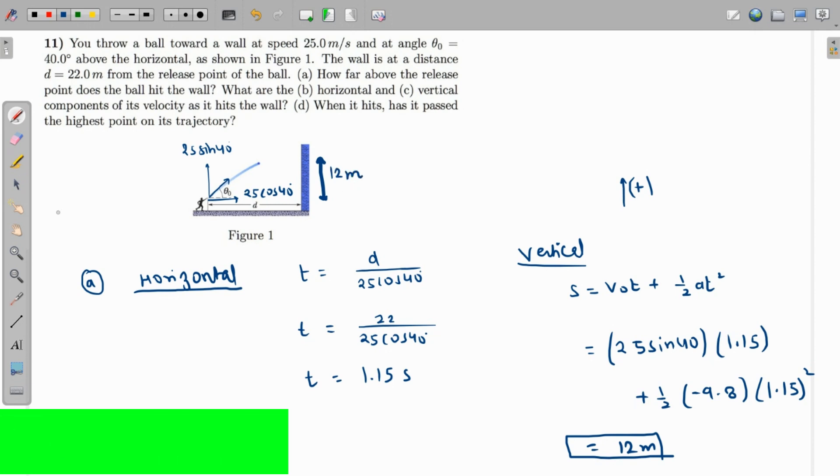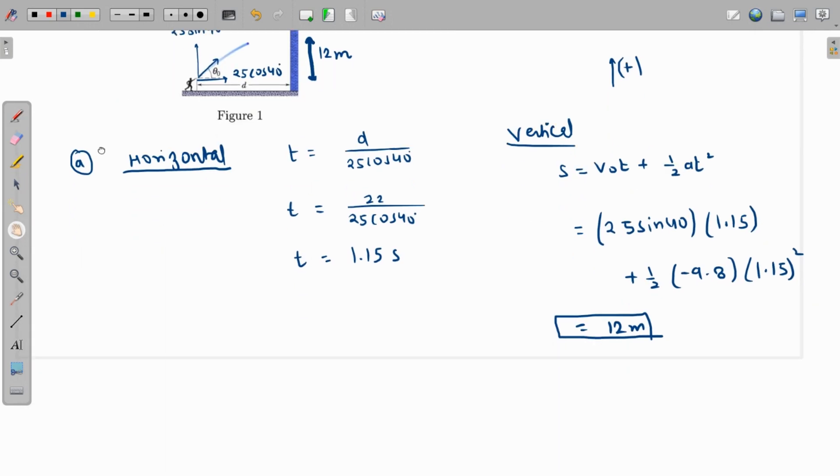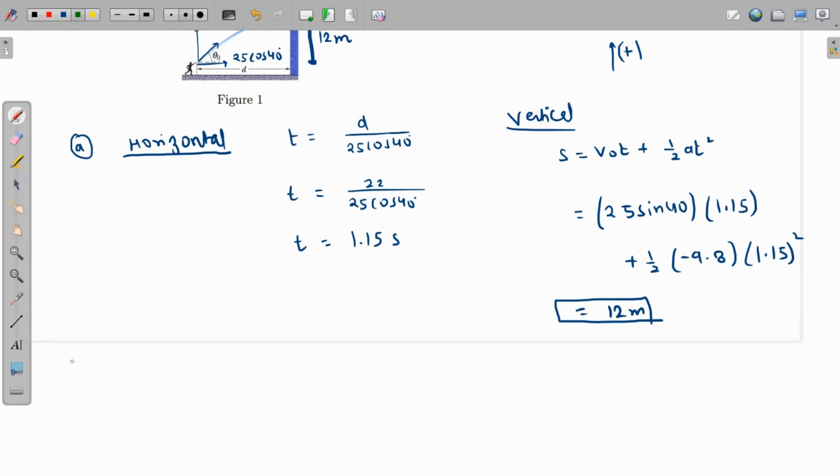What is the horizontal and vertical component of the velocity as it hits the ground? So definitely the horizontal component is not going to change, like I said, since there is no horizontal acceleration. So horizontal component of the velocity will still be 25 cosine of 40 degrees, and what is 25 cosine of 40 degrees? 25 times cosine of 40 degrees, which is 19.15 meters per second.